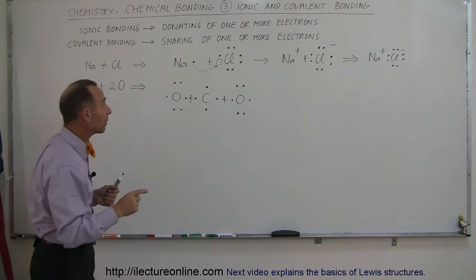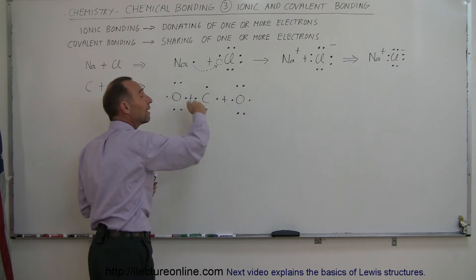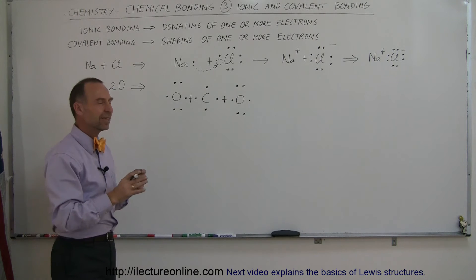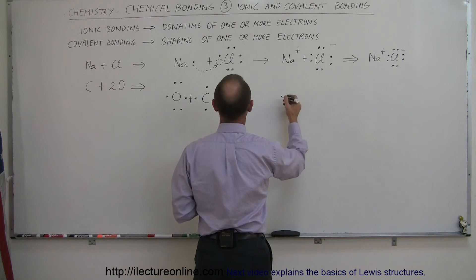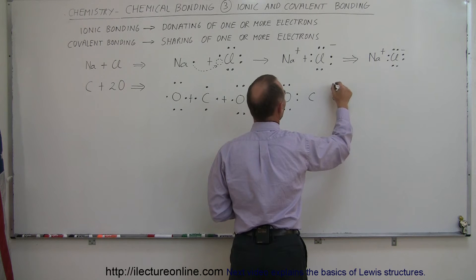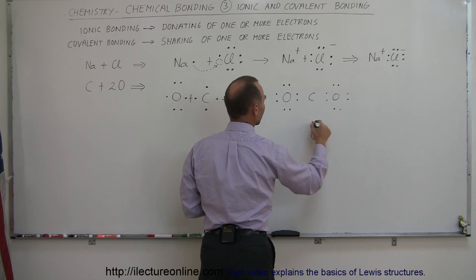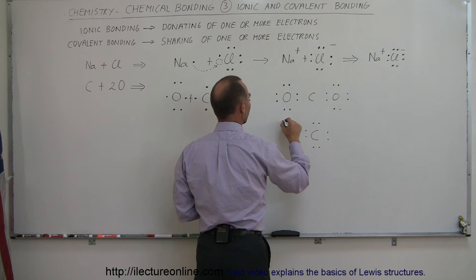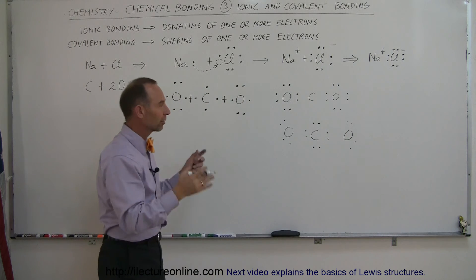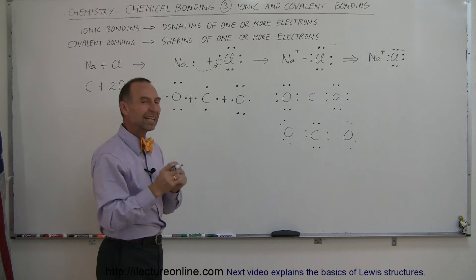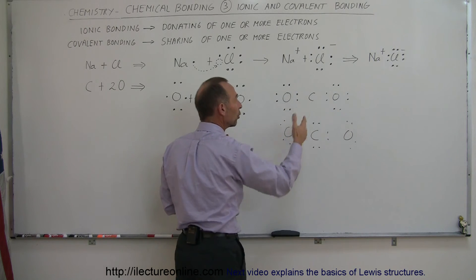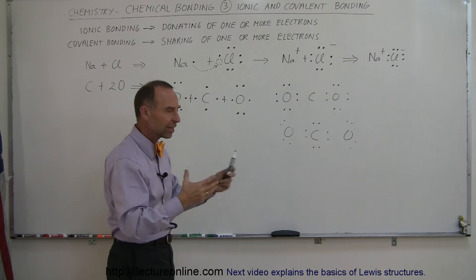Carbon says: I will do that if, part of the time, you give me two of yours and you give me two of yours, so that I can have eight valence electrons part of the time. So what happens is: part of the time you end up with oxygen having eight electrons, carbon with none, and another oxygen with eight. Then part of the time carbon has eight electrons, and each oxygen has only four. It goes back and forth on a continual basis, where electrons are being shared so that each atom has the opportunity to have a full set of valence electrons, then a partial set, then a full set, and so forth.